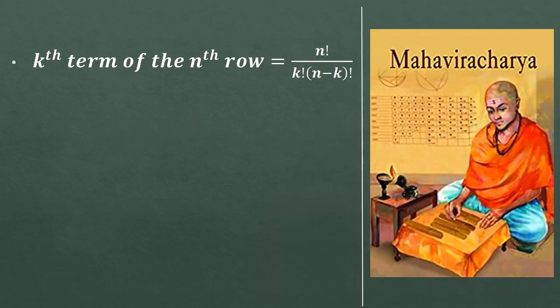An Indian mathematician, Mahaviracharya, he gave an expression or you can say a formula. He said that the kth term of nth row of this triangle can be written as factorial n by factorial k into n minus k factorial.